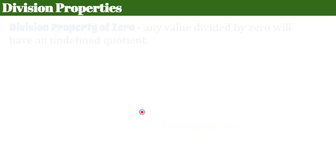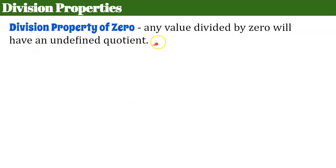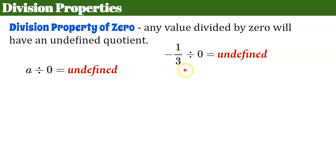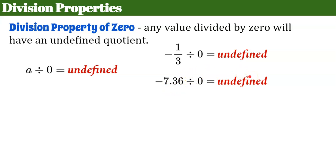Let's review the division properties. The division property of zero states that any value divided by zero will have an undefined quotient, just as we learned with integers. So any number A divided by zero is undefined. Thinking about division as dividing into groups, if you have a number A, you cannot divide that into zero groups — the smallest group you can have is one. Negative one-third divided by zero is undefined. Negative 7.36 divided by zero is undefined. So all rational numbers, which include our integers and whole numbers, when you divide by zero, it's undefined.